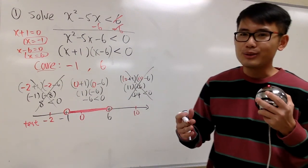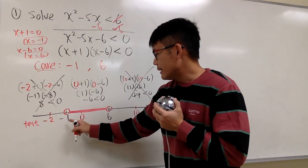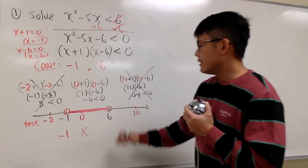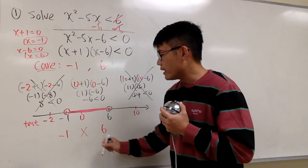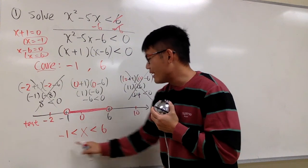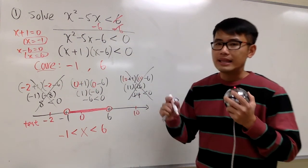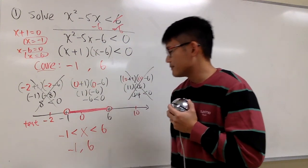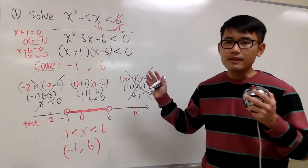The answer is just the middle interval. We can write it as an inequality: x is between negative 1 and 6, so negative 1 < x < 6, with the smaller value on the left and the bigger value on the right. They are open circles, so the inequality has no equal sign. In interval notation, the smaller number is negative 1 and the bigger is 6, and since both are open circles, we use parentheses: (negative 1, 6).